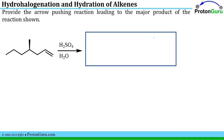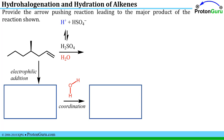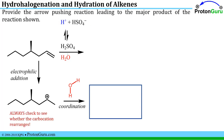Next we have the same type of question but with different reagents — an alkene reacting with sulfuric acid and water. We follow the same reaction sequence: electrophilic addition, form the carbocation, check for rearrangement, then coordinate the nucleophile. The conjugate base of sulfuric acid is not a good nucleophile — it's too bulky. But water can be used as a nucleophile, making this a hydration reaction.